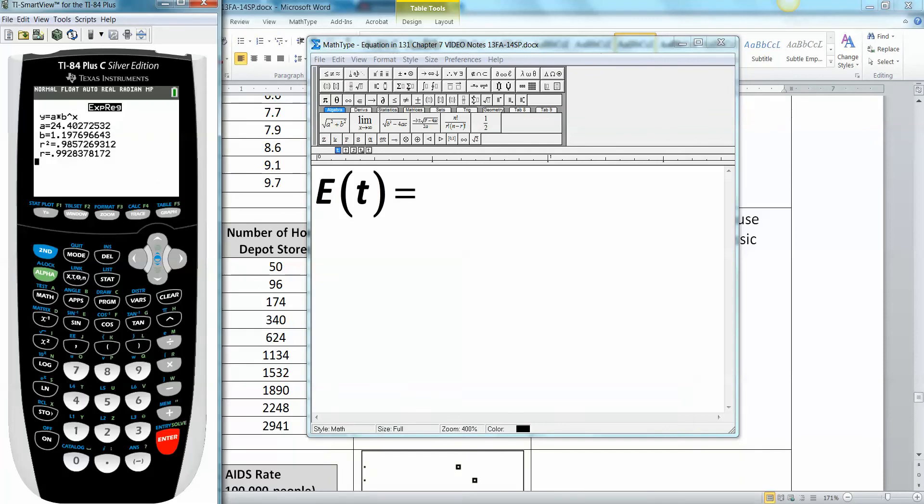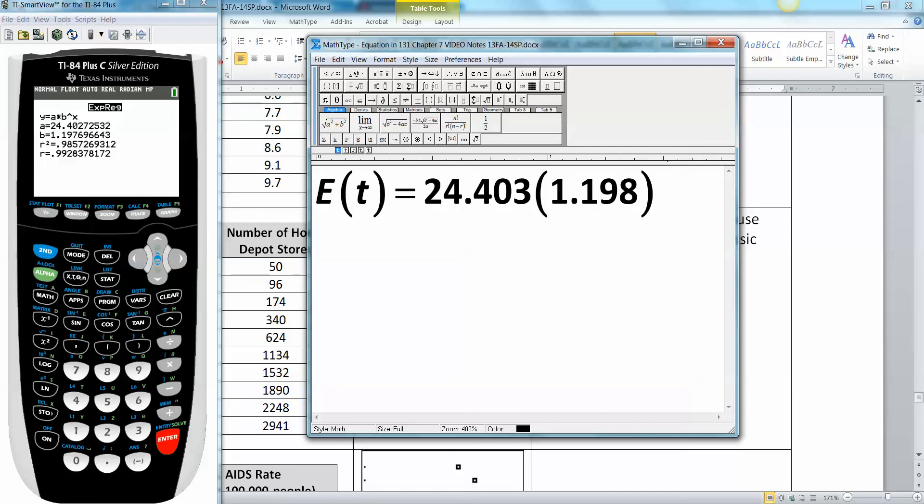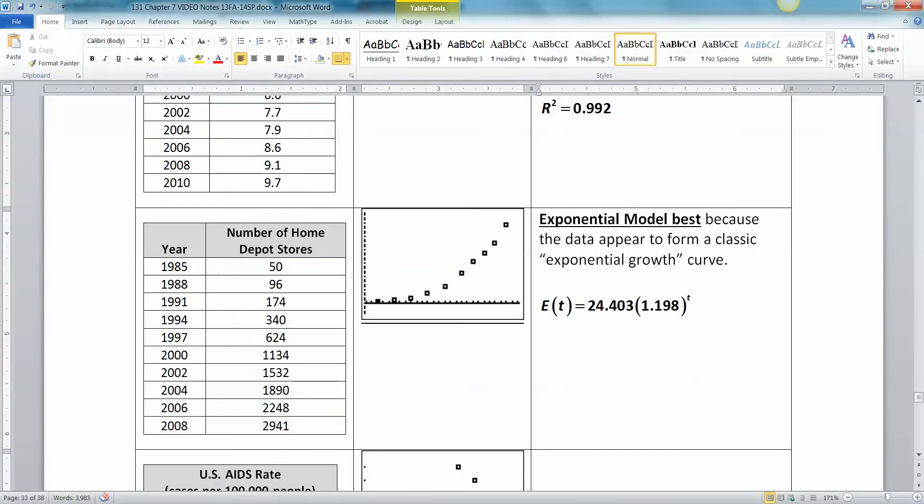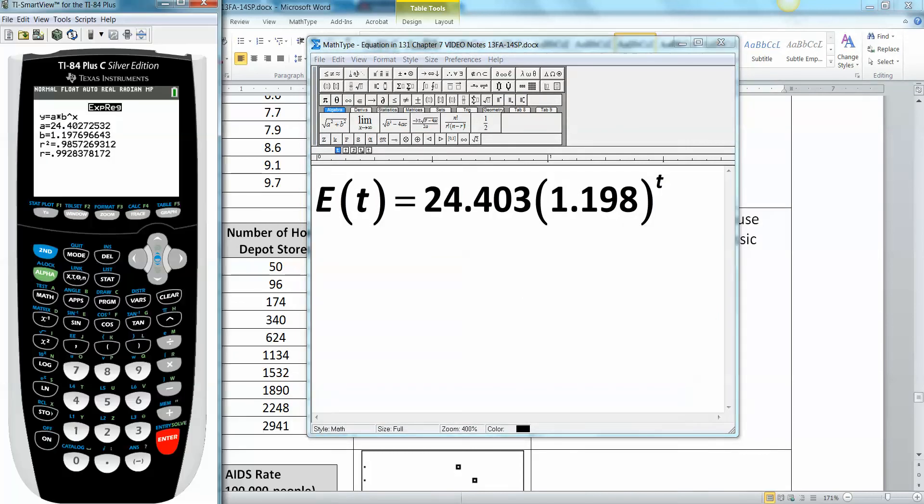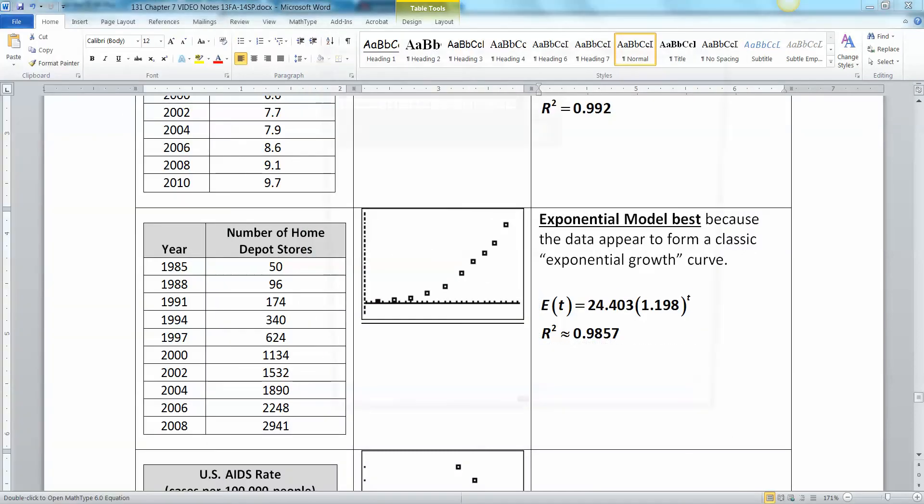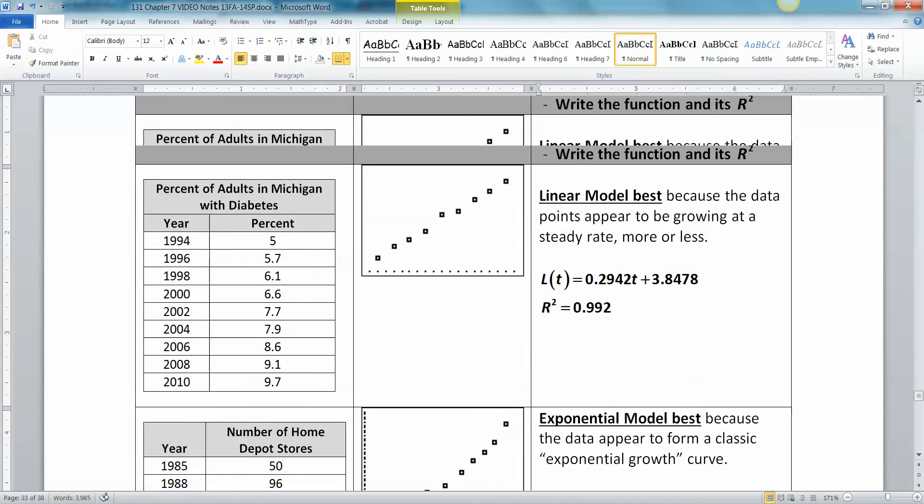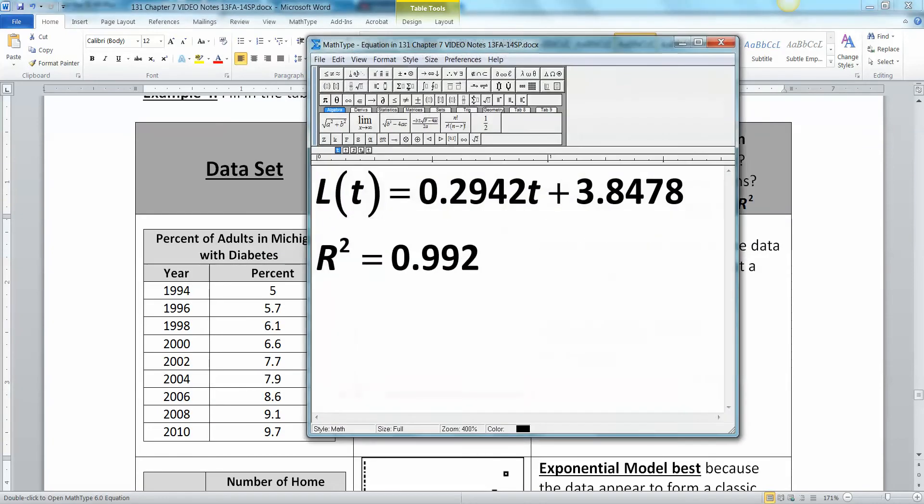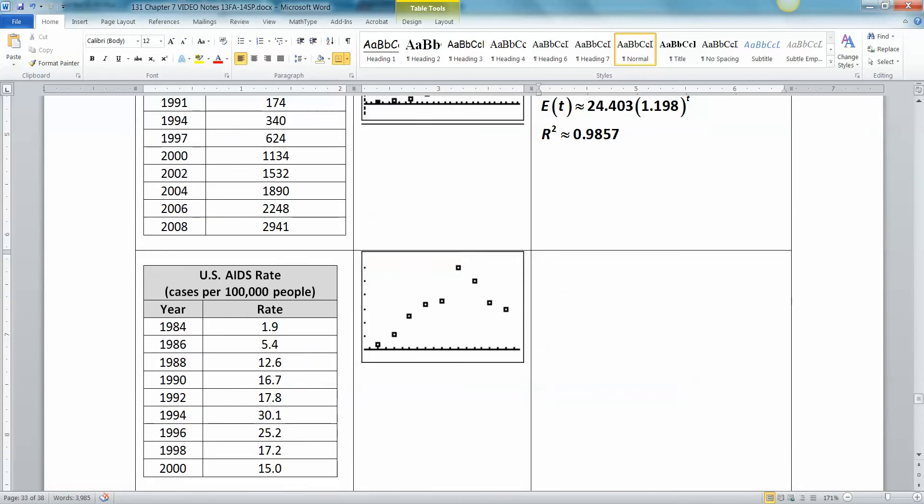And there we go. Oh, and we need R squared, I forgot. R squared is 0.9857. To be honest, I should have squiggly equals here too, because this isn't exact. We've rounded to make these models. So these shouldn't be equal signs, they should be approximations.